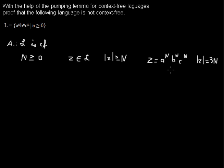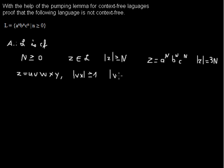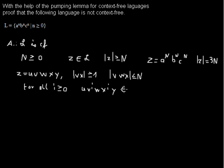For different languages there may be other ways to create a word longer than N, but here this is one possibility. For this word there must be a separation where z = u v w x y, where |vx| ≥ 1 and |vwx| ≤ N. Then for all i ≥ 0, the pumped word u v^i w x^i y must still be part of the language.